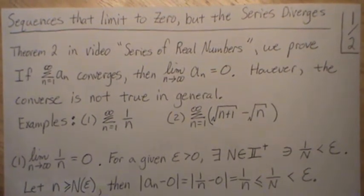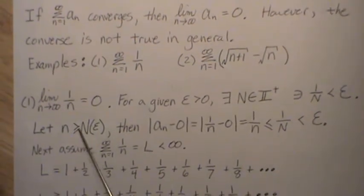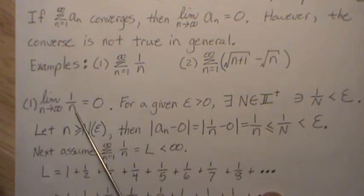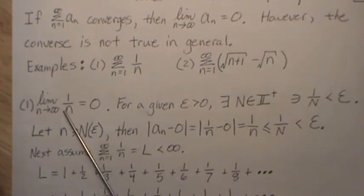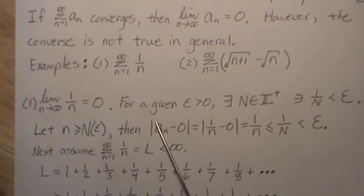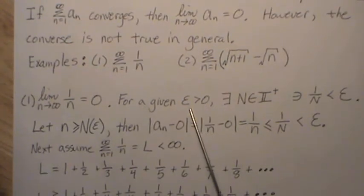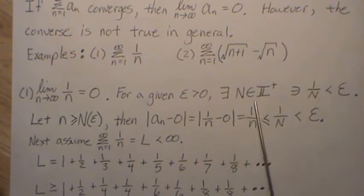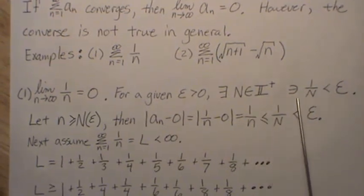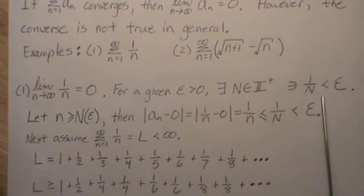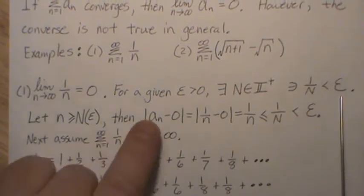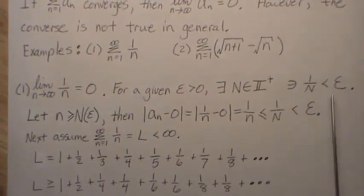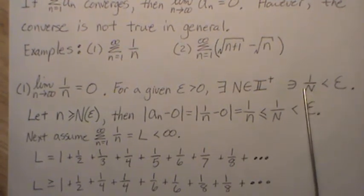We're going to prove each of those. First, the limit as n goes to infinity of one over n equals zero. Let's prove that the terms go to zero. For a given epsilon greater than zero, there exists an N in the positive integers such that one over N is less than this given epsilon, which is positive, no matter how small or how big.